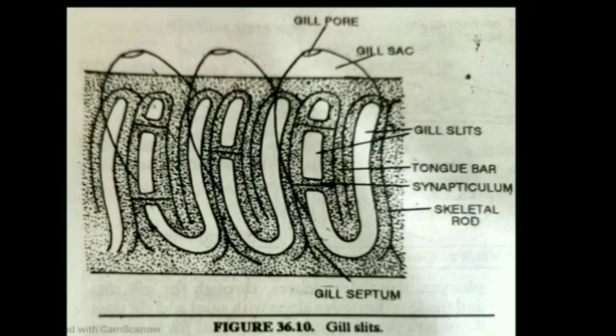Two features of the respiratory system show resemblance to the cephalochordate Branchiostoma: first, gill slits are initially oval but later become U-shaped due to growth of the tongue bar, which arises from the dorsal edge; second, they are supported by M-shaped skeletal rods whose middle ray is bifurcated and whose side arms are present in the adjacent gill bars.